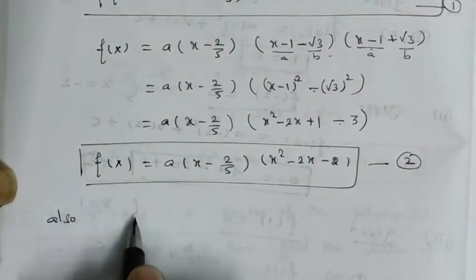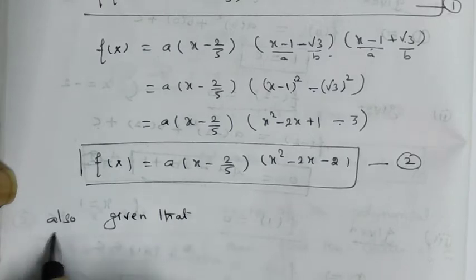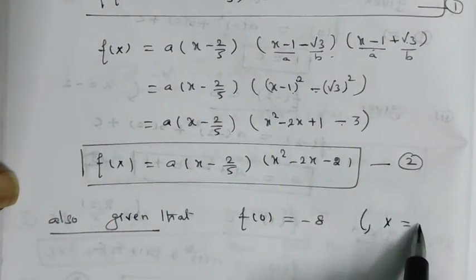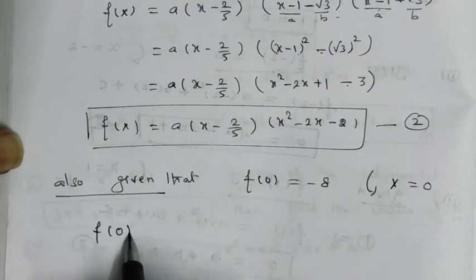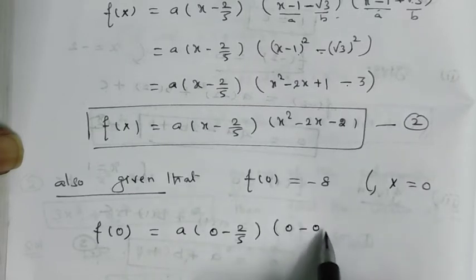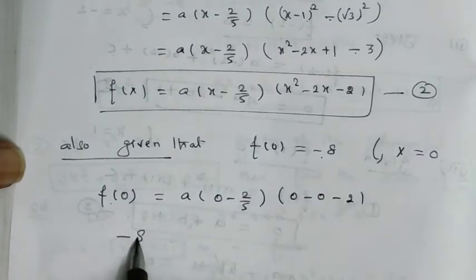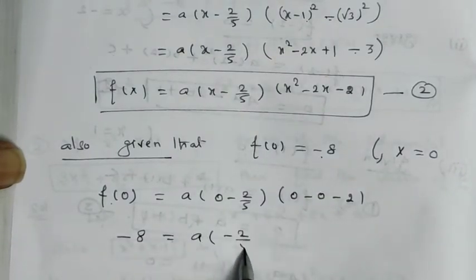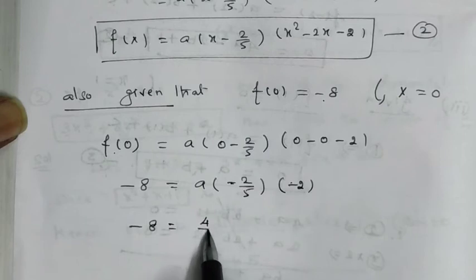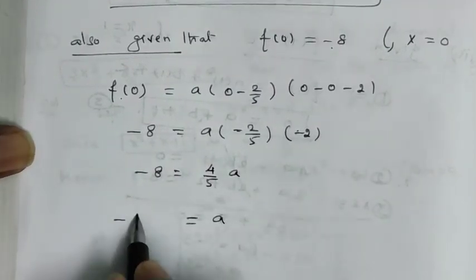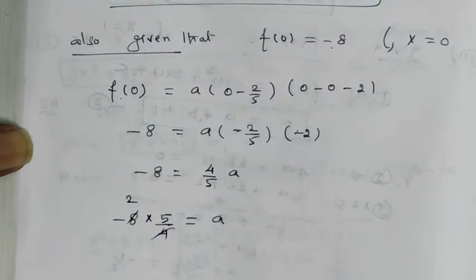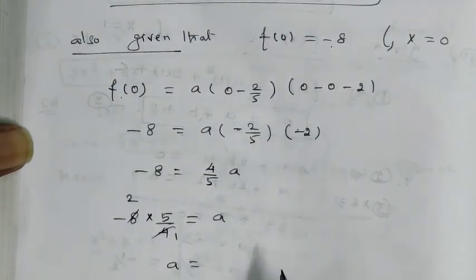Also given that f(0) equals minus 8. Substituting x equals 0: a into (minus 2/5) times (0 minus 0 minus 2) equals minus 8. So a into (minus 2/5) times (minus 2) equals minus 8, giving a into (4/5) equals minus 8, therefore a equals minus 8 times (5/4) equals minus 10.